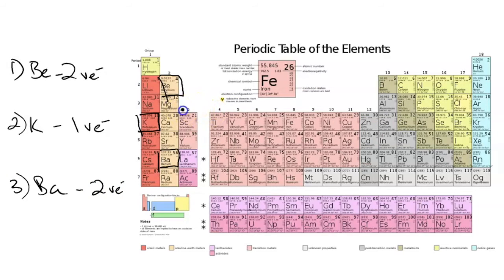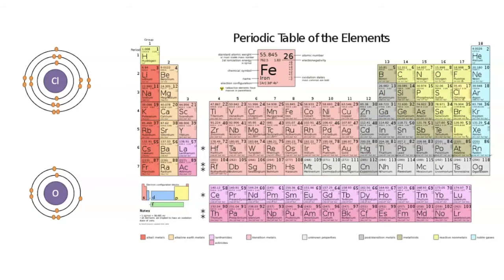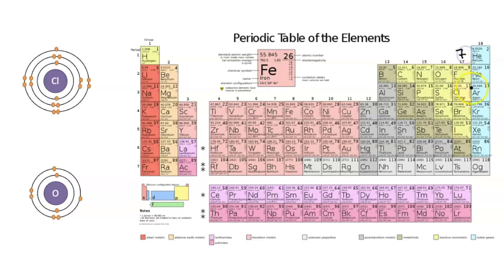This method we cannot use for our transition metals, only with our main group elements, but we can use it for most of the elements in groups 13 through 18. But there's a little bit of a twist. Let's take chlorine, for example. With the Bohr's model, we see that the outermost energy level has seven valence electrons: two, four, six, seven. But chlorine is in group 17. In this case, what you would do is look at the last number of the group number for groups 13 through 17. So all elements in group 17 have seven valence electrons.